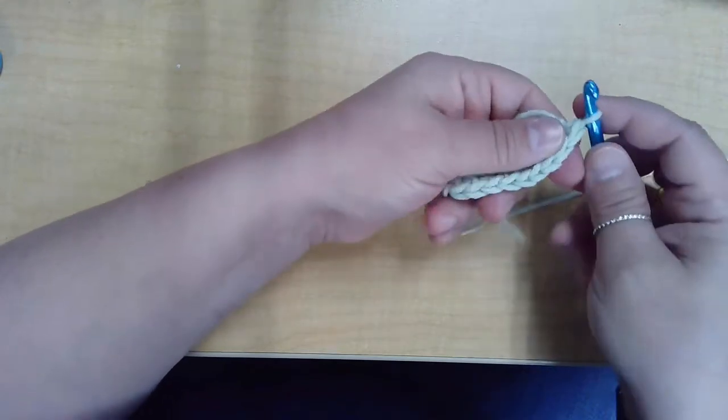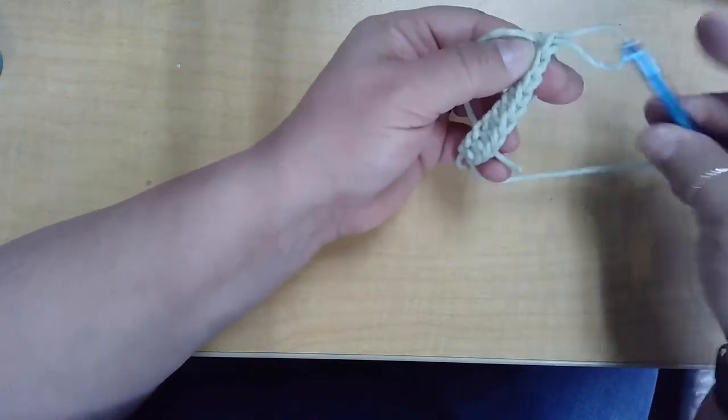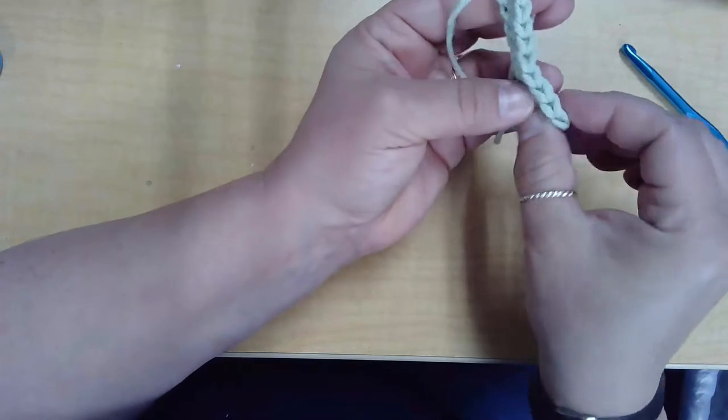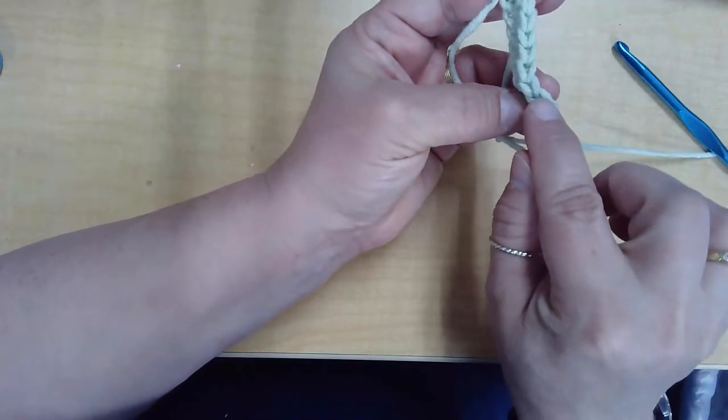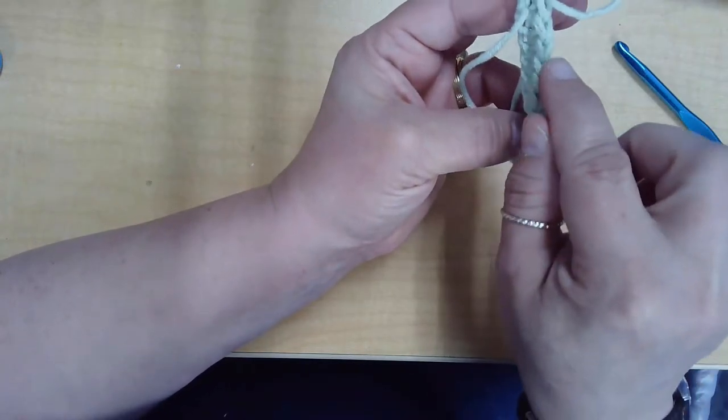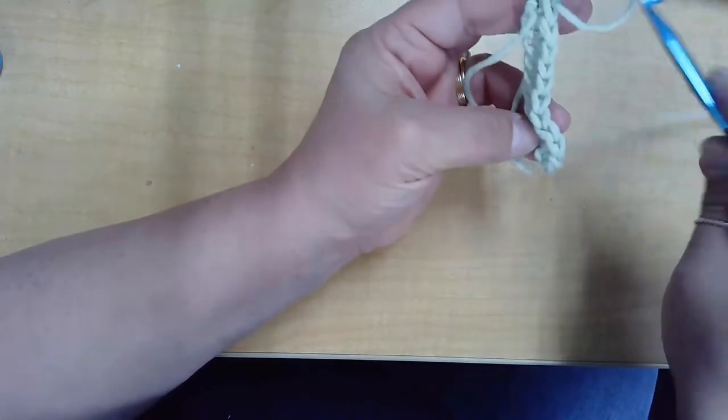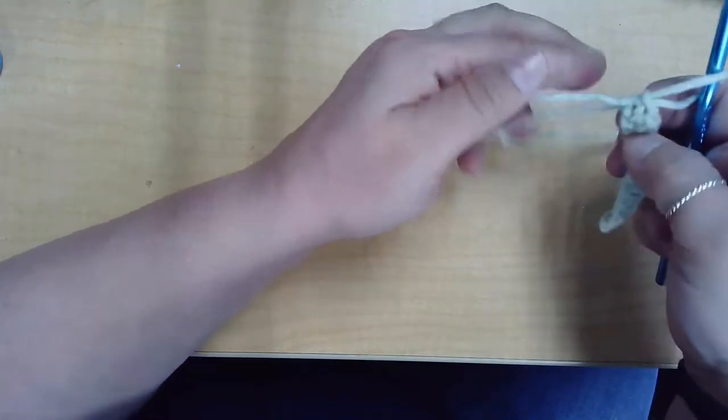All right, we've reached the end of our swatch. We're going to turn. Well, first I want to show you how it looks. Each stitch we made is a V on top, this V shape, and that's how you can count how many stitches you have.